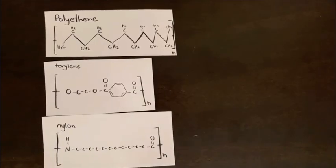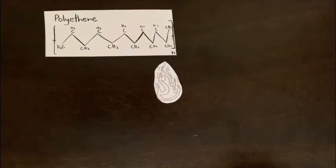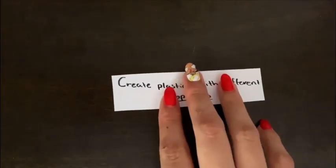But these three polymers all have different properties. For example, polyethene has heat resistance, toughness, and translucency. So how do we create plastics with different properties?